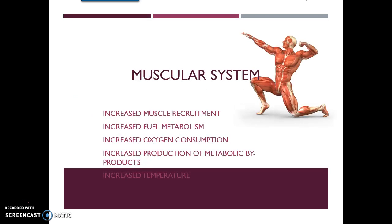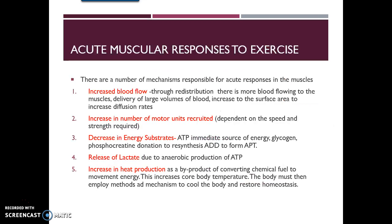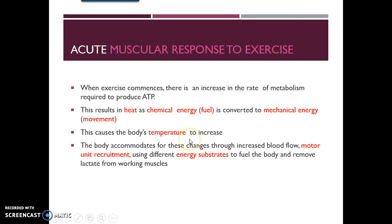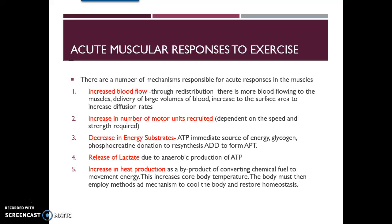Looking at the muscular system, we see an increase in muscle recruitment. With increased blood flow to working muscles, muscles use greater amounts of oxygen, and an increased number of motor units are recruited. This is largely dependent on the speed and strength required — the more strength or speed needed, the more motor units are recruited. We also see a decrease in energy substrates, as energy systems work to resynthesize ADP to ATP, and a rise in lactate due to increased anaerobic ATP production.